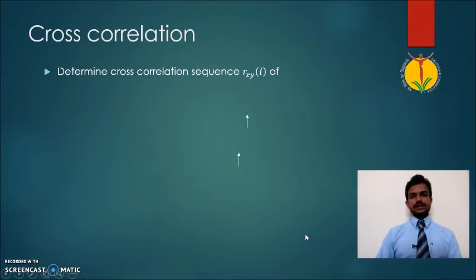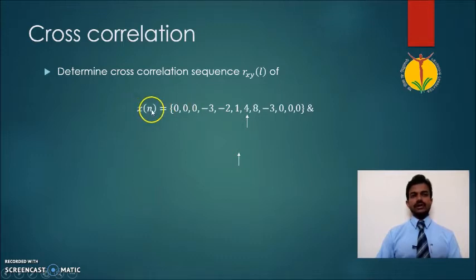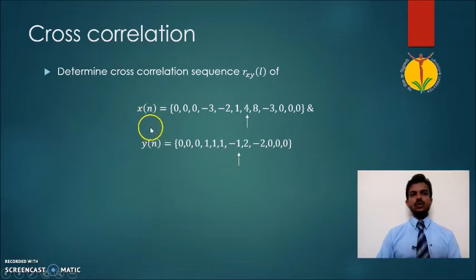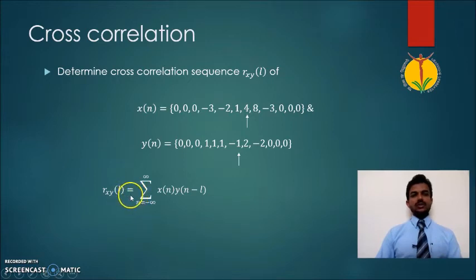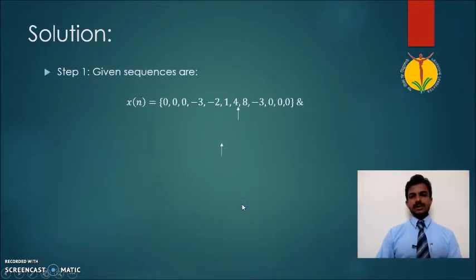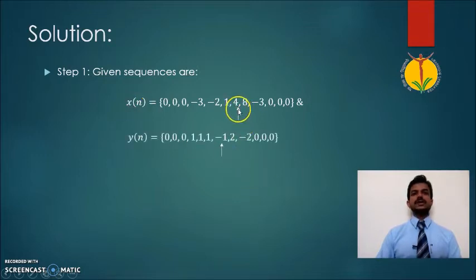Let us see one simple example for the comparison of two data sequences. Here we have X(N) with different samples and another sequence Y(N) with its samples, and we have to form the cross correlation between these two sequences. We are using the standard equation of cross correlation and will solve it step by step. Here the arrow indicates the zero sample or zero point.